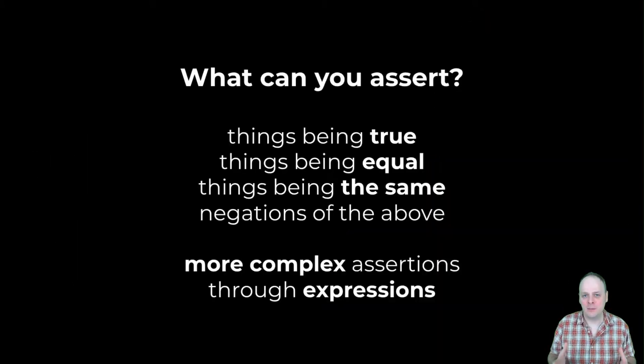What kind of things can you assert? You can assert things being true. You can pass an expression to be evaluated, and if that expression evaluates to true, then the assertion passes. If it evaluates to false, the assertion fails. You can also assert things being equal, comparing two objects with a .equals comparison. You can also assert that things are the same, meaning they're identical, physically the same reference.